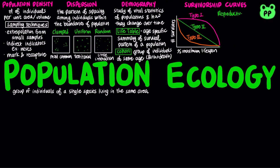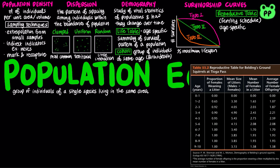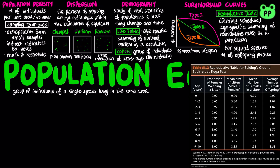For species with sexual reproduction, demographers often concentrate on females in the population. A reproductive table, also known as a fertility schedule, is an age-specific summary of the reproductive rates in the population, which tallies the number of female offspring produced by each age group.